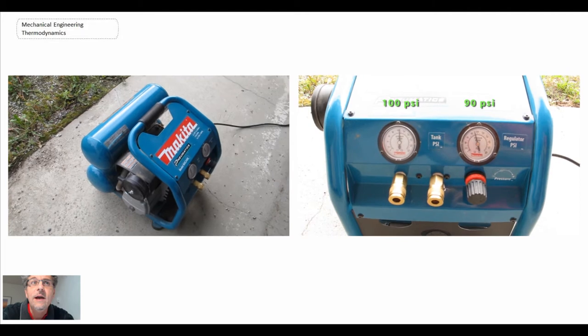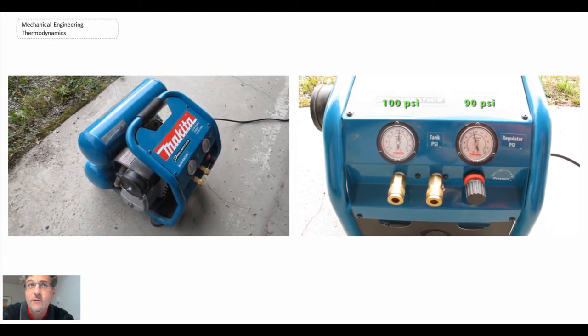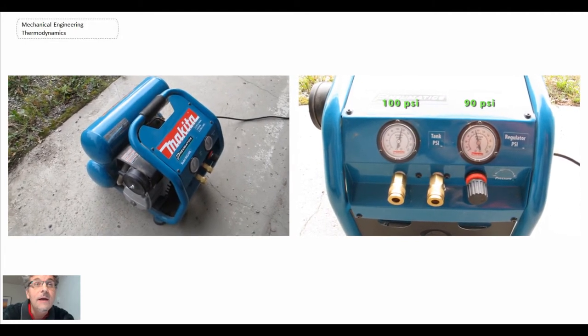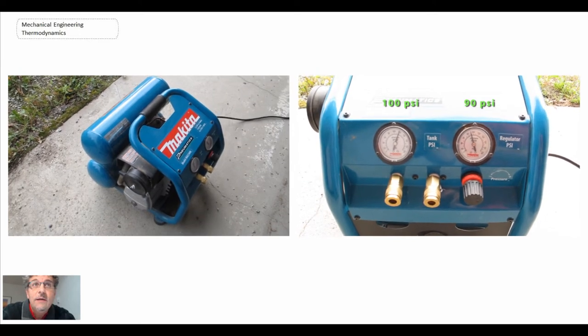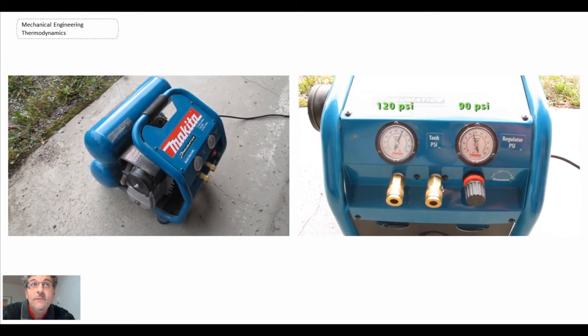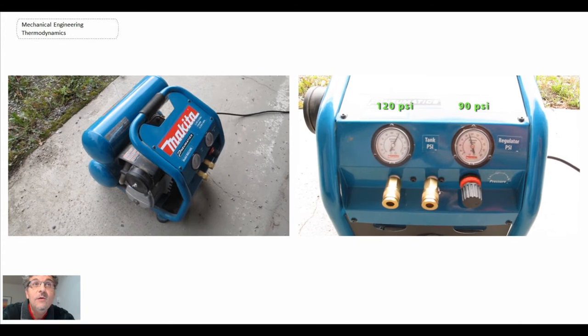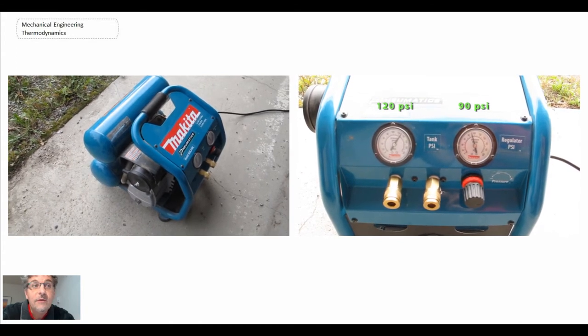We can see on the right now we're at 100 psi. The regulator peaks at 90 psi because that's what it's set at. The pressure continues to go up to 120 and eventually we get to 130 psi and the compressor shuts off.